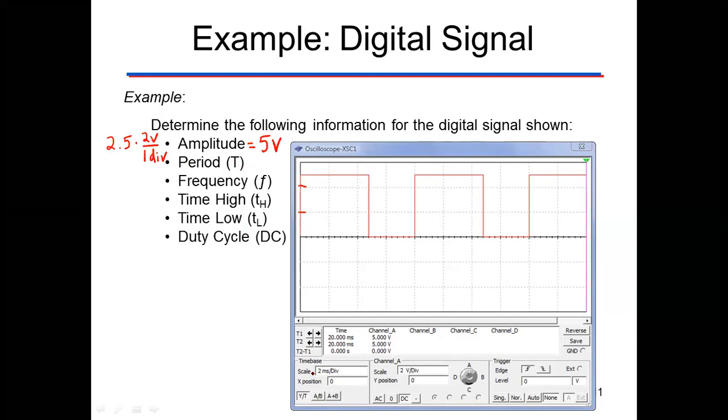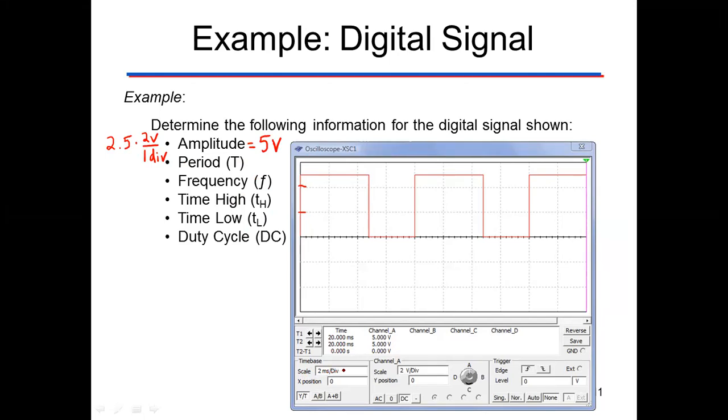The period. So here we do have to check that X scale first, which is two milliseconds per division. At two milliseconds per division, we have one, two, three, and four. Sometimes I like to look at a second wave or a full wave that I can see. So we've got four times the two milliseconds per division, and so what that gives us is eight milliseconds. It is important to use your units, eight milliseconds.